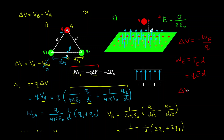Therefore the change in electric potential between these two points is equal to minus the work done by the electric field, which is QED over Q — giving us minus ED. Given our electric field has magnitude equal to the charge density over 2 times the permittivity constant, multiplied by the distance D that the test charge has been displaced — that's our result.